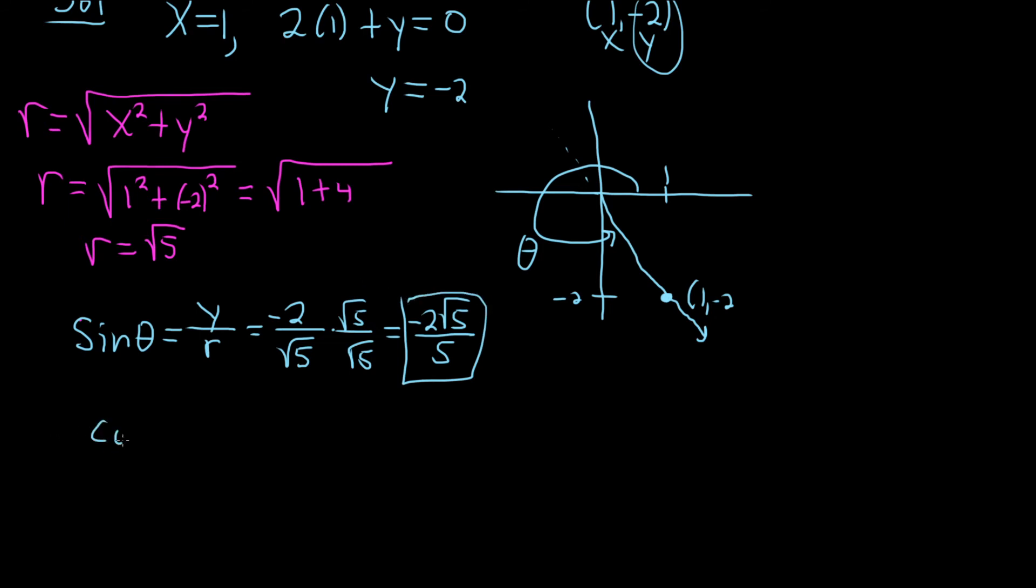The cosine of theta is equal to x over r. So x here is 1, so this would be 1 over r, which is the square root of 5. And again, if you want to rationalize, you multiply by the square root of 5 over the square root of 5, and so that's equal to the square root of 5 over 5.